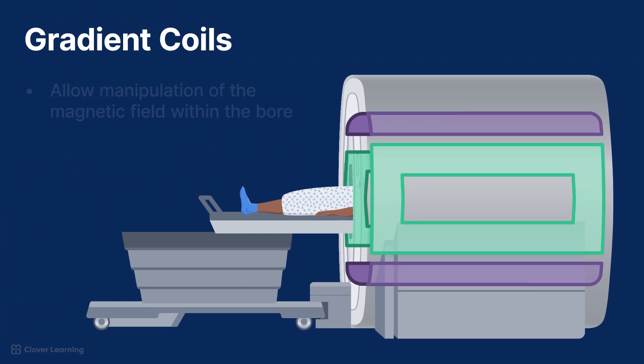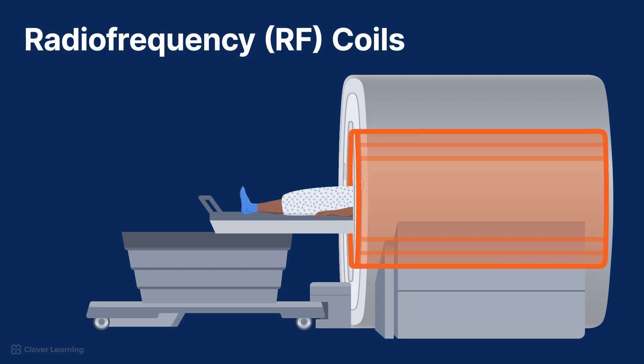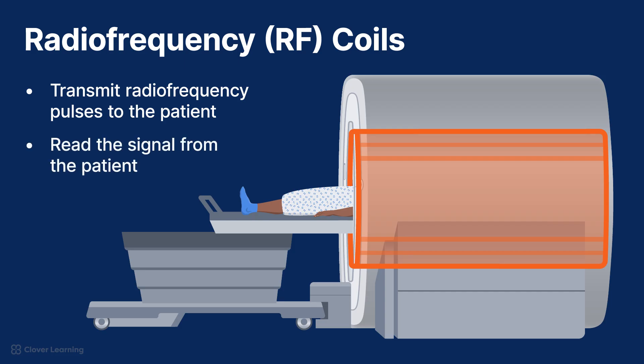The gradient coils in an MRI scanner allow us to manipulate the magnetic field within the bore. Gradient coils modify the magnetic field along different axes or planes, creating variations or gradients in the magnetic field strength across the patient's body. This allows for the MRI scanner to target specific areas of the patient's body for imaging. The radiofrequency, or RF, coils transmit radiofrequency pulses to the patient. There are also RF receive coils that read the signal from the patient. The RF coils are sensitive to signals coming from different areas of the body, which allows for more detailed diagnostic images.